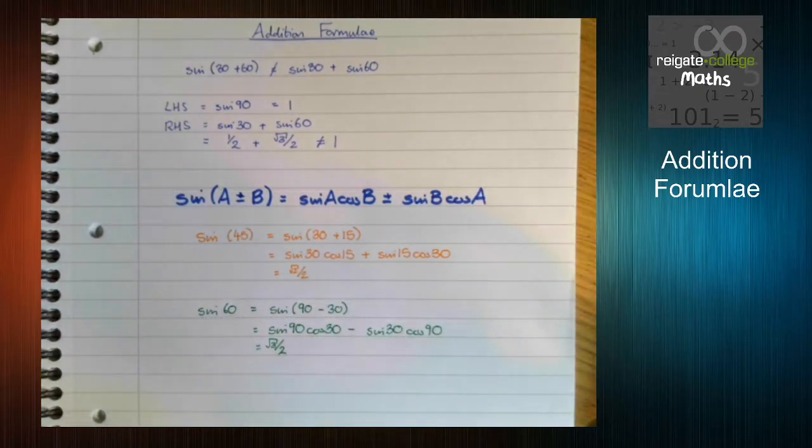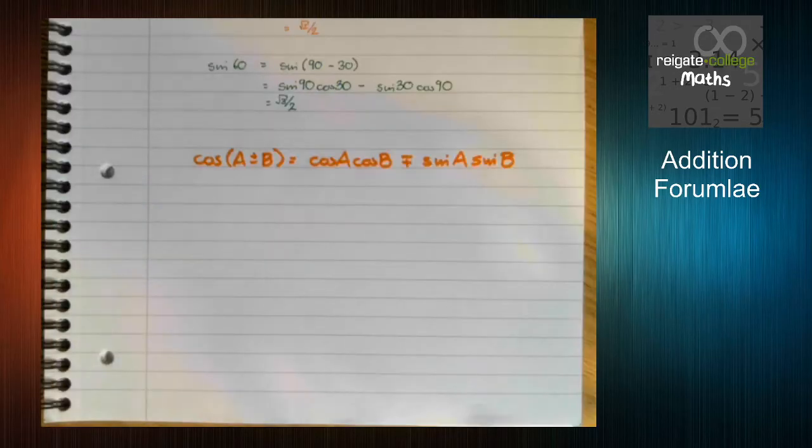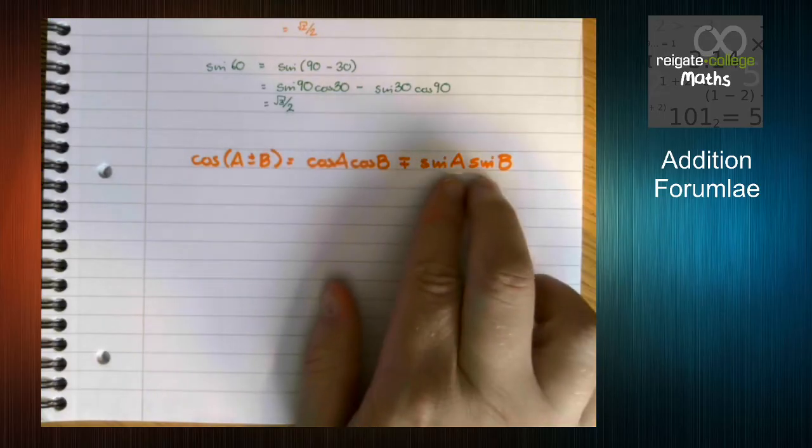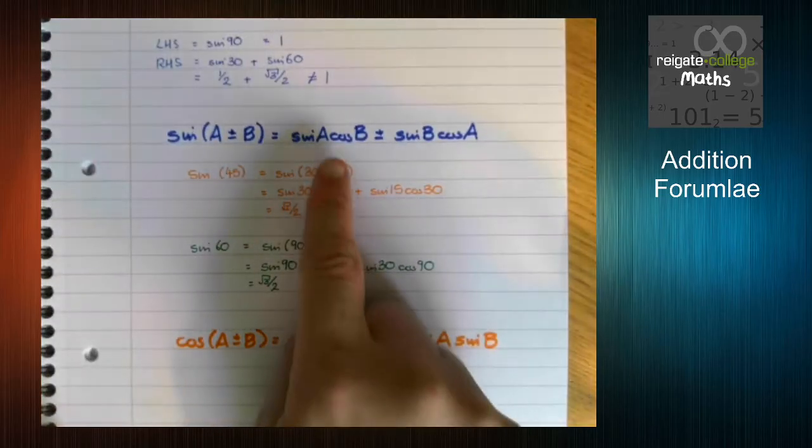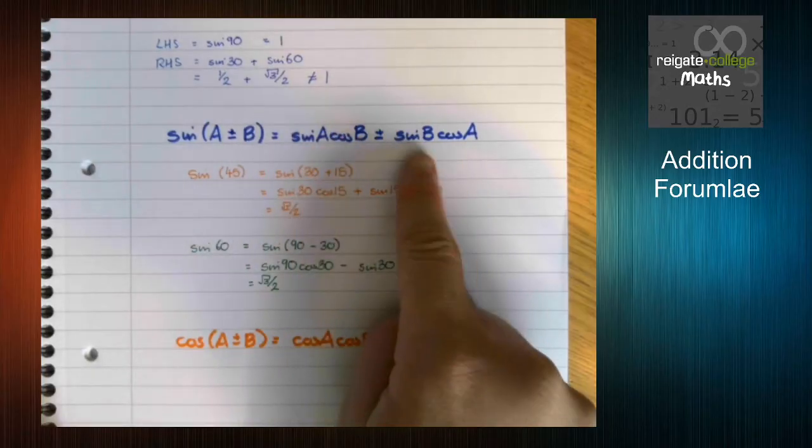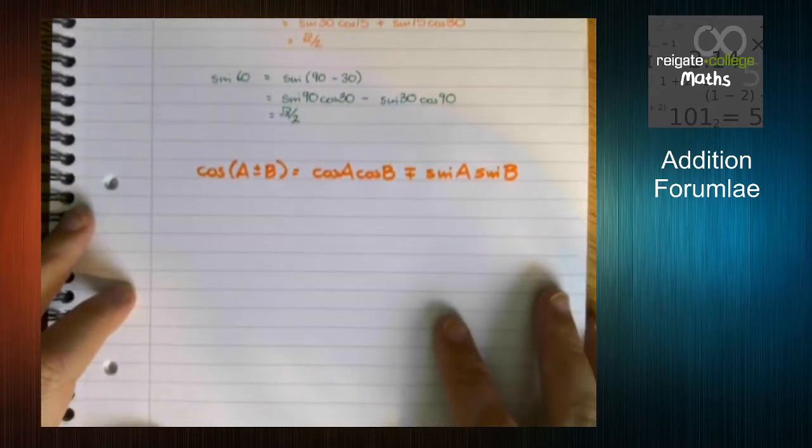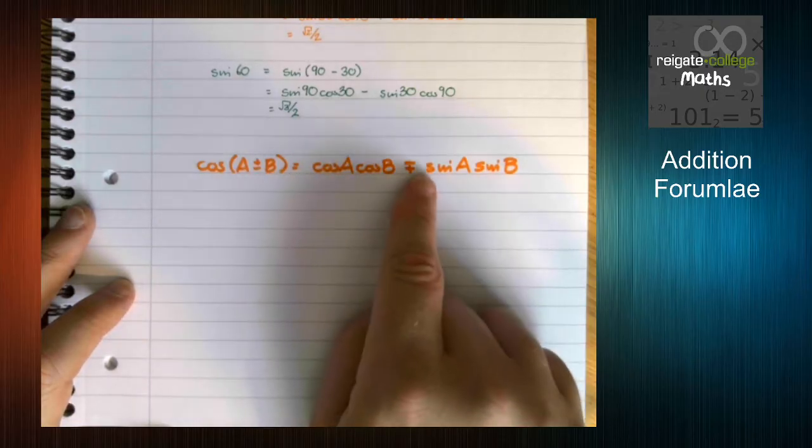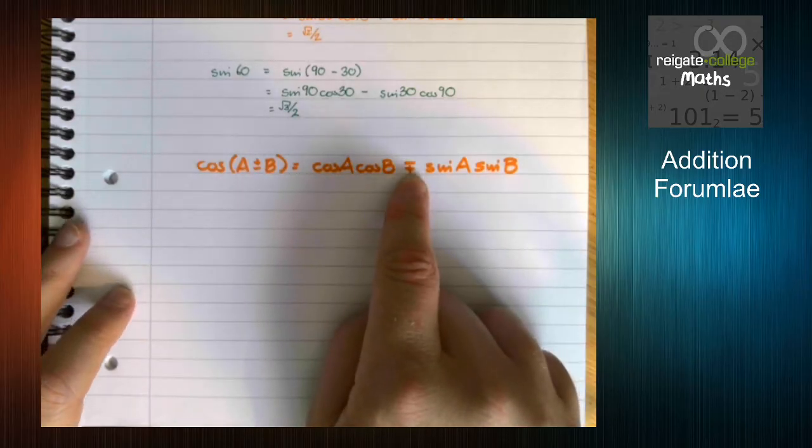So that's the way the sine one works. The cos and the tan work slightly differently. So this is the addition formula for cos. Notice two things that are different to the sine one. First off, we have both the cosines here and both the sines here. Whereas before we had a mixture and a mixture, this formula works in a different way. Also notice here, this symbol is the other way up. What this means is, whatever sign is in here, the opposite one is in here.